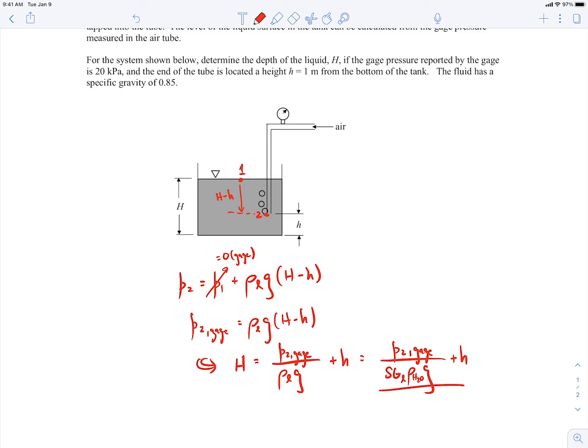Okay, so there we go. The p2 gauge is this pressure that we measure here. Now we know that p2 is the pressure down there, but since this tube is filled with air, we know that the pressure will be constant with elevation in this air.